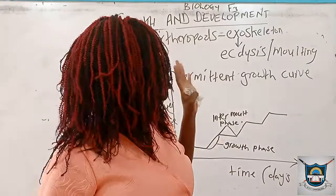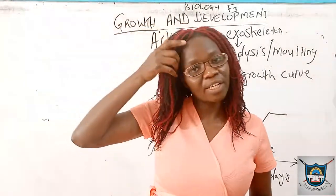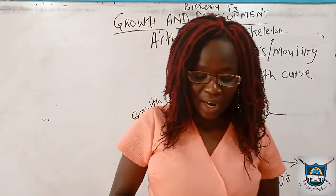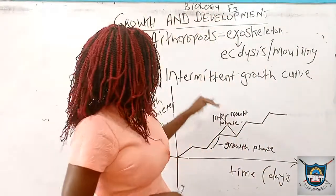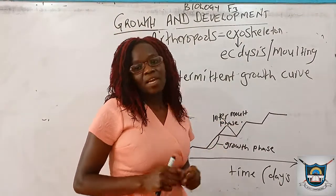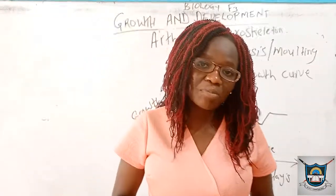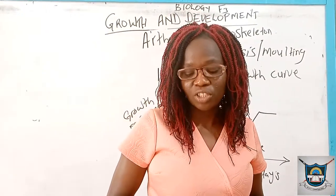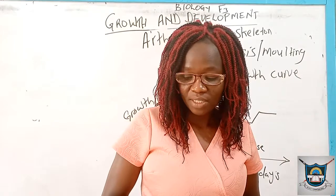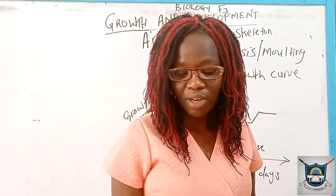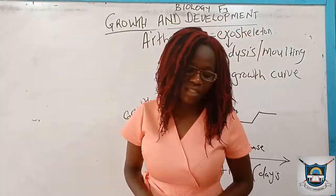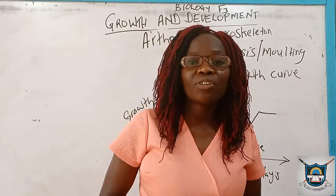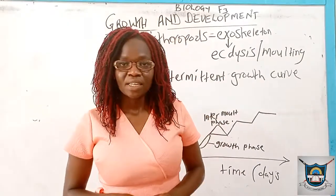So we have found that there are two types of growth curves: the sigmoid curve and the intermittent curve. During the intermittent growth phase, growth occurs but the tissues do not expand, so there is no net growth during that period. That takes us to the end of our discussion of growth curves, and now we look at growth and development in plants.